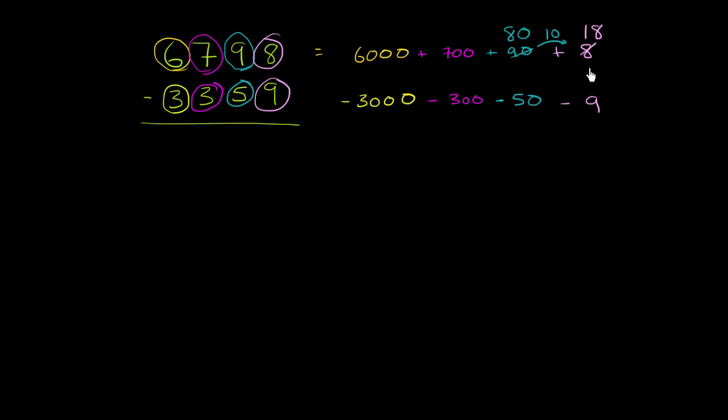Notice, I did not change the value of the number. I just essentially changed how I represented it. Instead of saying it's 6,000 plus 700 plus 90 plus 8, I'm just saying that it's 6,000 plus 700 plus 80 plus 18. Those are both going to give you 6,798.